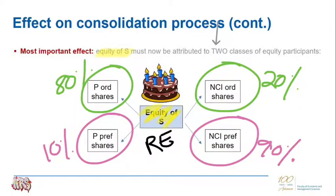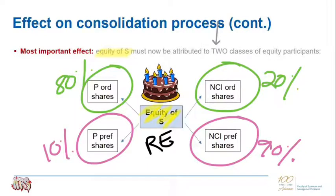If you look at one amount for equity of S — let's assume something like retained earnings — how will you take one amount for retained earnings of S and attribute that in these ratios to your equity participants? That would be the focus of chapter 8. What we need to do when we attribute the equity of S is slice up that cake so that each equity participant gets the piece they are entitled to. We determine how much of that equity of S each equity participant is entitled to, and we will spend a lot of time on this in the analysis of equity and on the timelines going forward in this chapter.